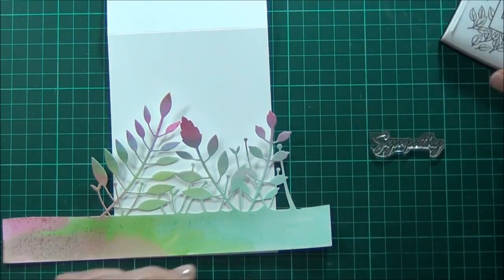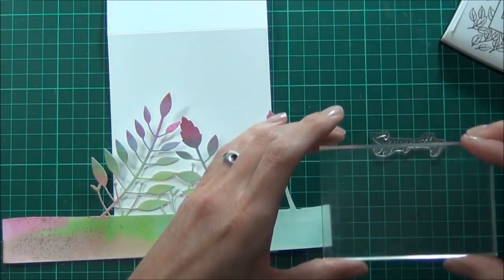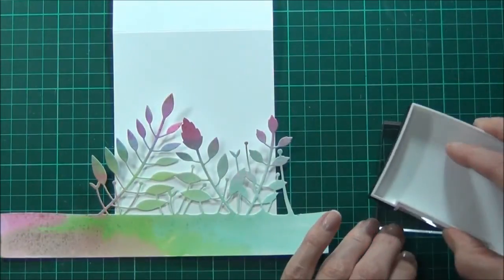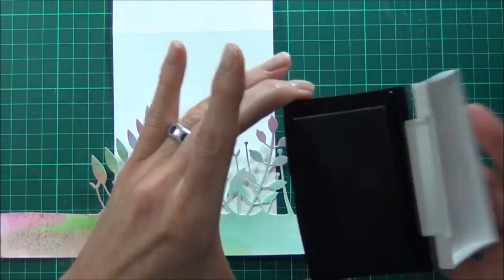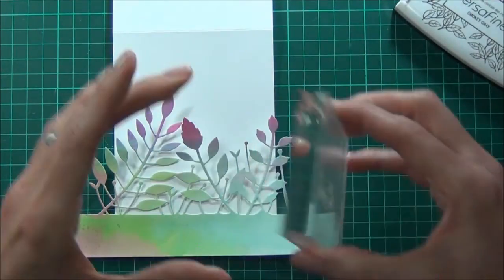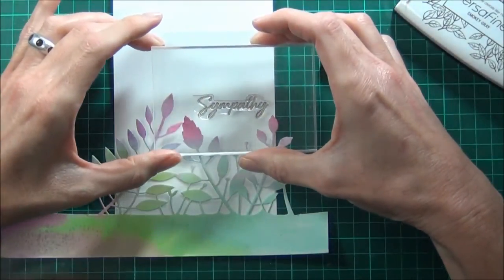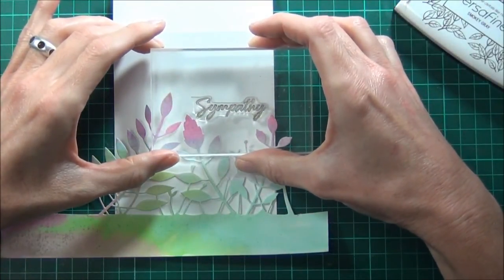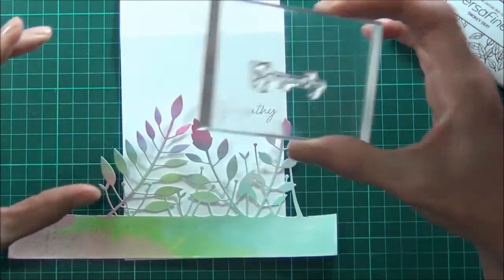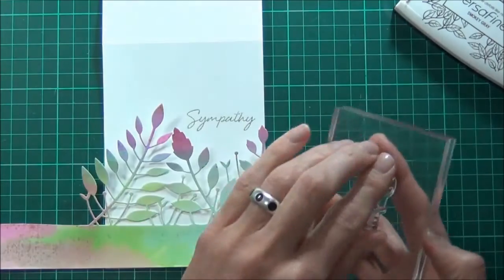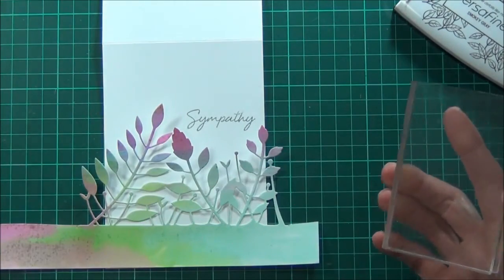The ink I'm going to use is called Smokey Grey. It's a VersaFine. I just love the way that these inks stamp. Beautiful. The finished size of my card is 15 by 10.5 centimeters.